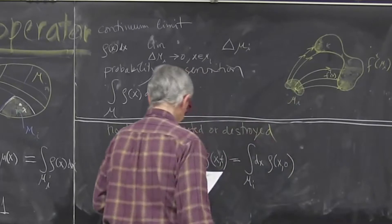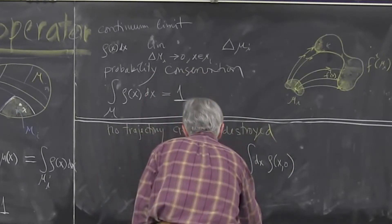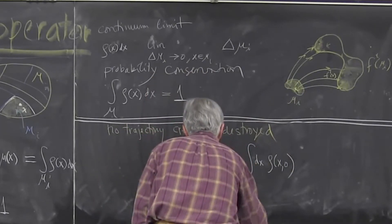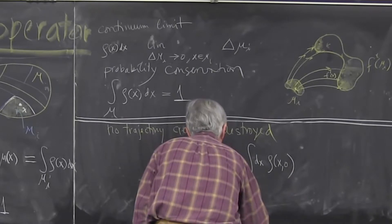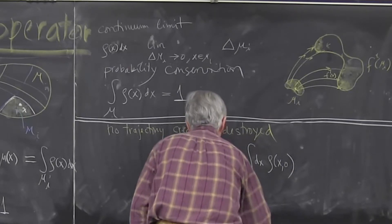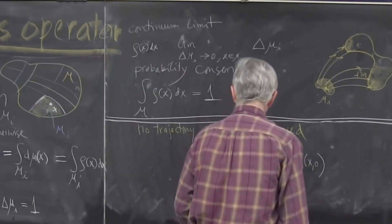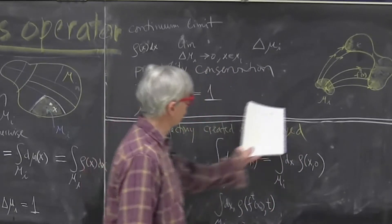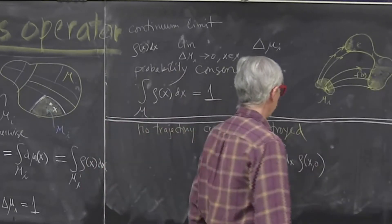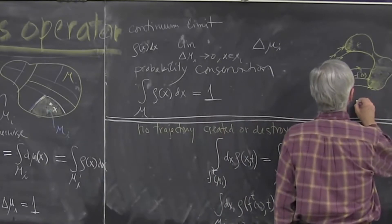times rho every trajectory propagated from the initial one times t, and as I'm changing coordinates from here to here, I'll pick up a Jacobian.